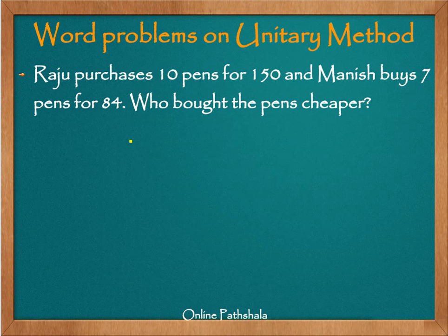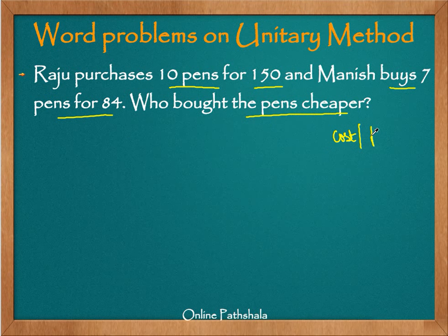Let us see a few more examples on the unitary method. In this case, the example says that Raju purchases 10 pens for 150 rupees and Manish buys 7 pens for 84 rupees. Who bought the pens cheaper? We want to find out who bought the pens cheaper. The simpler way is to find out the cost per pen for each person and then compare.